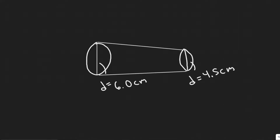In this problem, we're told a 6 centimeter diameter horizontal pipe gradually narrows to 4.5 centimeters. When water flows through the pipe at a certain rate, the gauge pressure in these two sections is 32 kilopascals and 24 kilopascals respectively. What is the volume rate of flow?